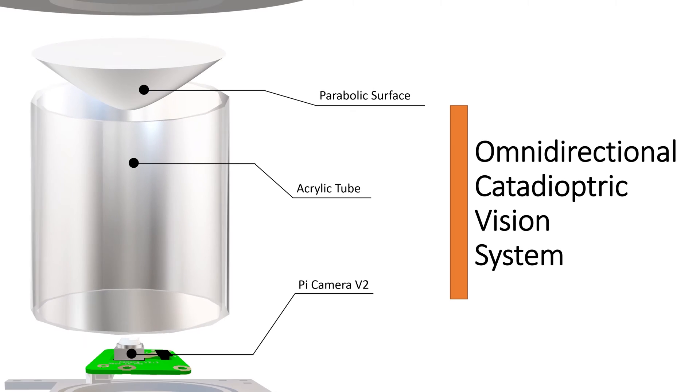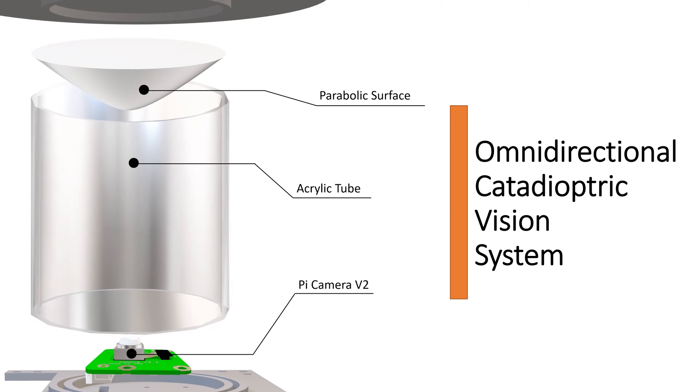The entire vision system is enclosed with a top non-reflective plate and a base mounting plate. The vision system captures a 360 degree image around the robot, providing Matilda a great advantage for path planning and obstacle avoidance.